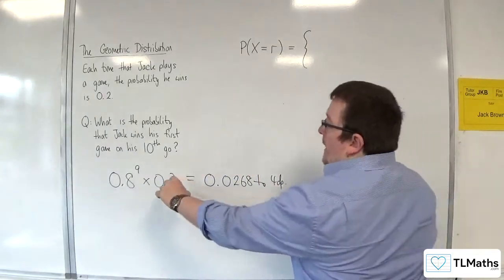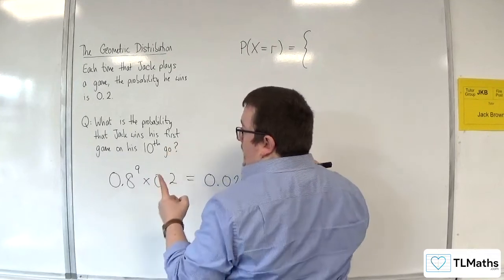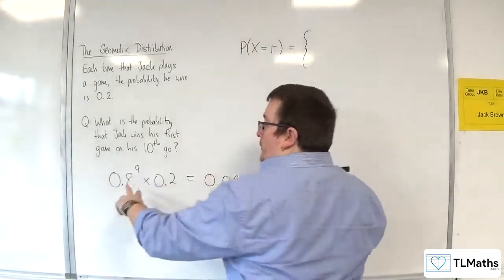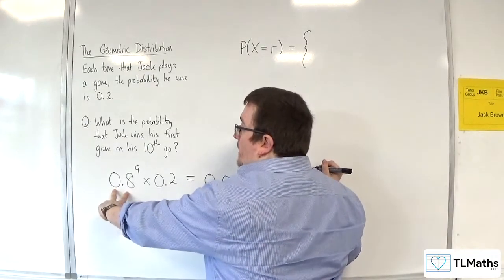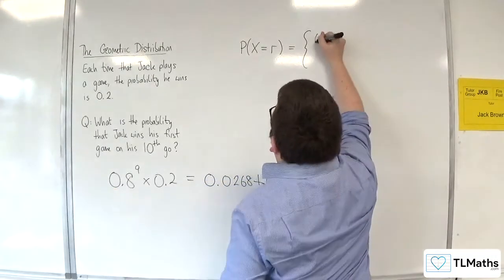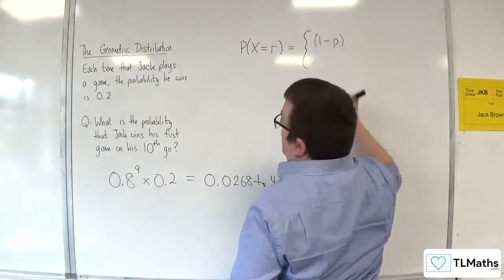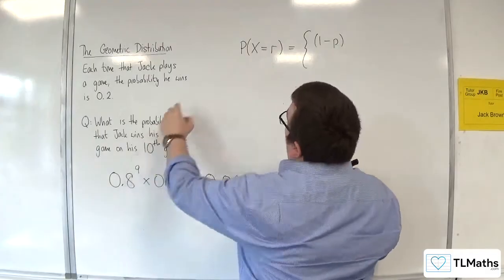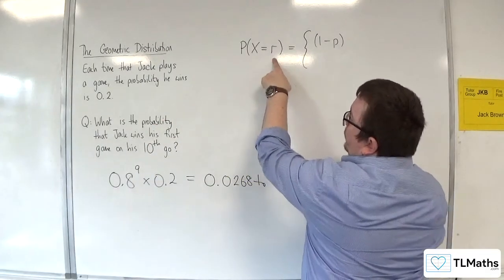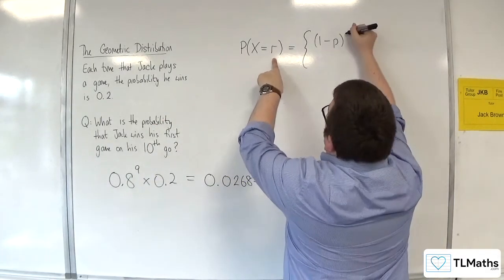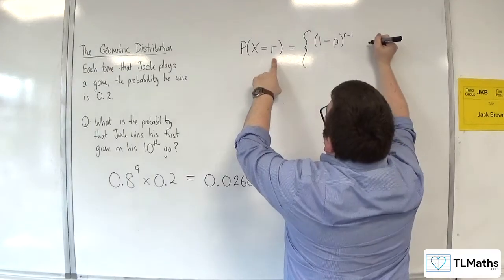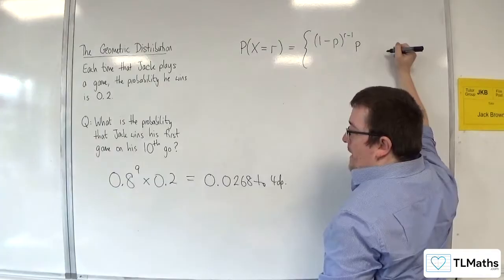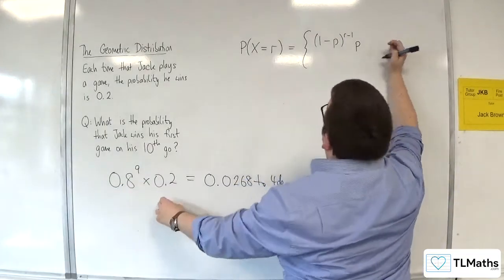If we let P be the probability of success, then here we've got the probability of failure. So that is 1 minus P to the power of, well, that number is always 1 less than that number. So if I want X to be equal to 10, then I need the power to be R minus 1. And that's multiplied by the probability P.